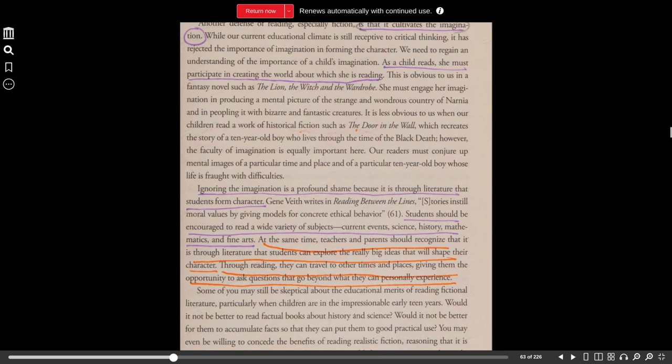This is obvious to us in a fantasy novel, such as The Lion, the Witch, and the Wardrobe. She must engage her imagination in producing a mental picture of the strange and wondrous country of Narnia, and in peopling it with bizarre and fantastic creatures. It is less obvious to us when our children read a work of historical fiction, such as The Door and the Wall, which recreates the story of a ten-year-old boy who lives through the time of the Black Death.